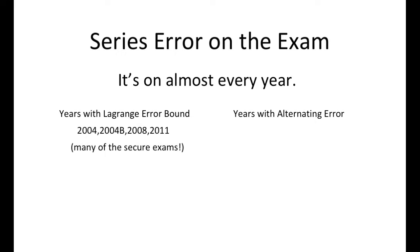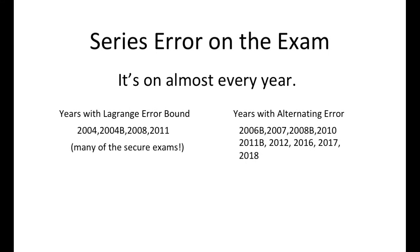Alternating series shows up frequently on the released exams: 2006B, 2007, 2008B, 2010, 11B, 12, 16, 17, 18 — just kind of all the time. So basically one or the other is going to be on the exam almost every year, and that's just on the free response. They're also on the multiple choice, so it's a really important topic.